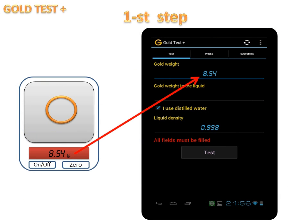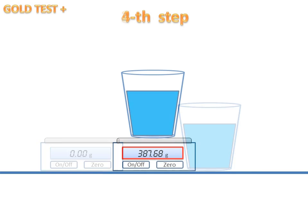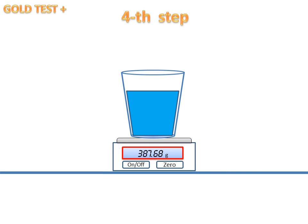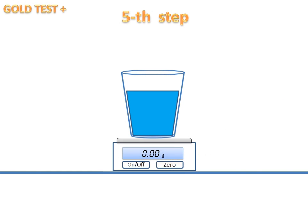First, measure the weight of the gold and input the result in the weight field of the app. Take the cup and scales, fill the cup with distilled water, then put it on the scales. Make sure the weight of the filled cup is not out of the measuring range of the scales. Then push the calibrate zero button — the scales will display zero weight.